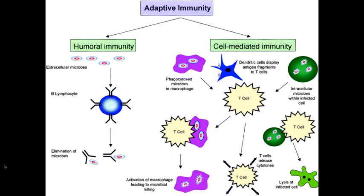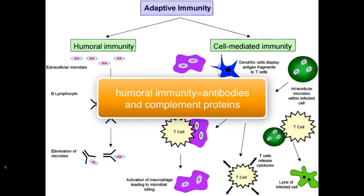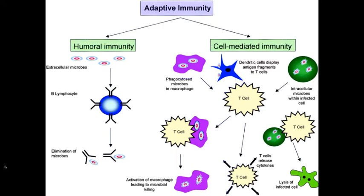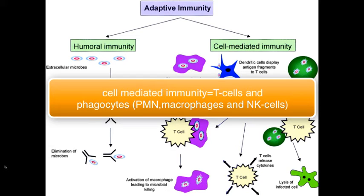Your immunity has two major types: innate and adaptive. T cells are part of your adaptive immunity, which itself has two subtypes — humoral immunity and cell-mediated immunity. Your humoral immunity essentially refers to your plasma complement proteins and your antibodies, while cell-mediated immunity, as the name suggests, involves cells such as T cells and phagocytes.